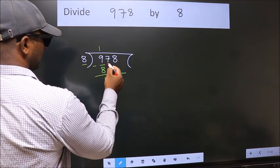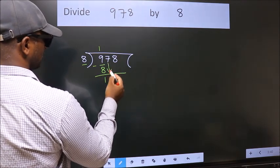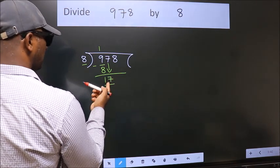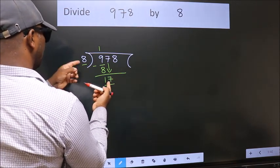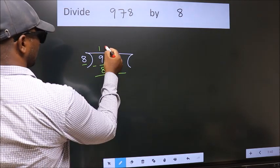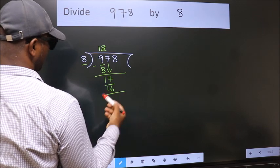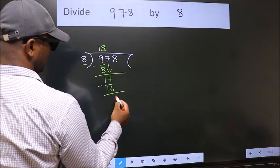After this, bring down the next number. So 7 down. So 17. A number close to 17 in the 8 table is 8 times 2 equals 16. Now we subtract. We get 1.